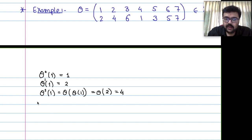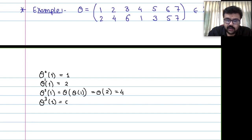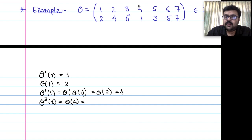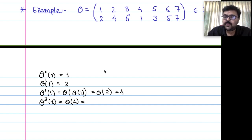Continuing: theta^2(1) = 4. Theta^3(1) means apply theta once more on 4, so theta(4) = 1. We get back to 1. Theta^3(1) = 1.